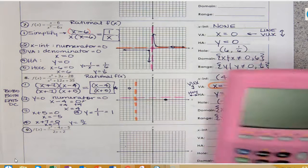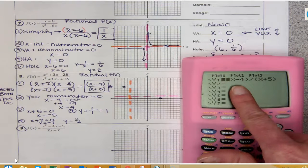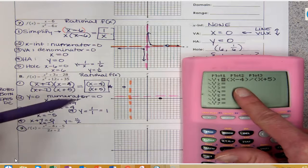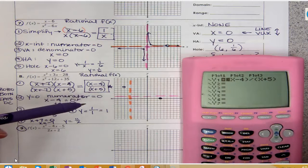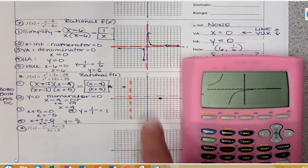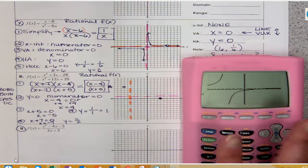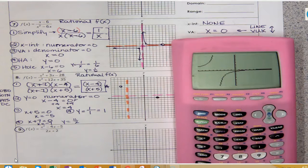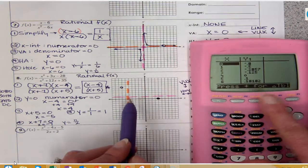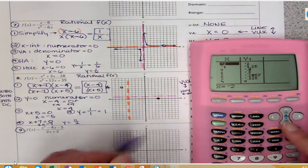Now I need to graph it. I'll take my graphing calculator and plug in the simplified equation y equals (x minus 4) over (x plus 5) — not the original equation, only the simplified one. The graph looks about right: it crosses the x-axis because my horizontal asymptote is at y equals 1, not the x-axis, and my vertical asymptote is correctly at about negative 5. From my table, I have (4, 0) already graphed, and plotting (negative 2, 2) gives another point.